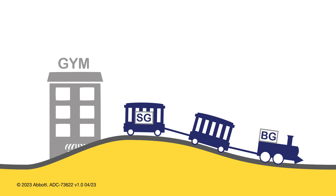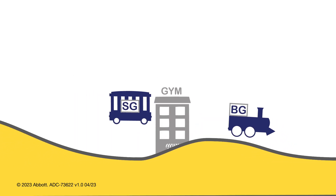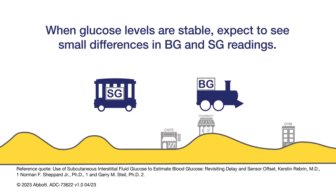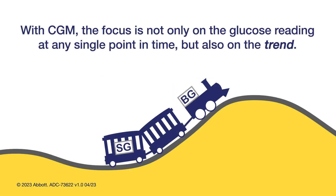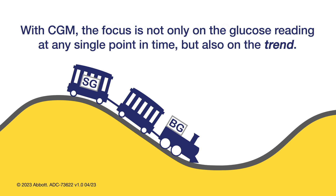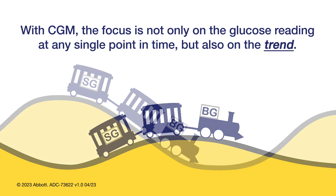There are a couple of important things to keep in mind. When glucose levels are generally stable, expect to see small differences in blood glucose and sensor glucose. However, when the glucose level is changing rapidly, expect to see bigger differences between the blood glucose and sensor glucose readings. It's important to note that with CGM, the focus is not only on the glucose reading at any single point in time, but also on the trend.